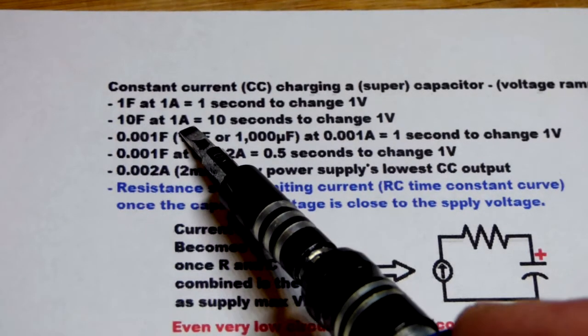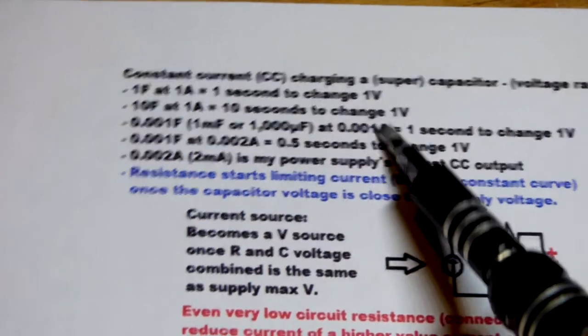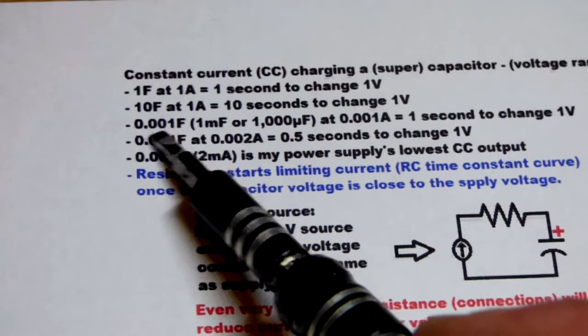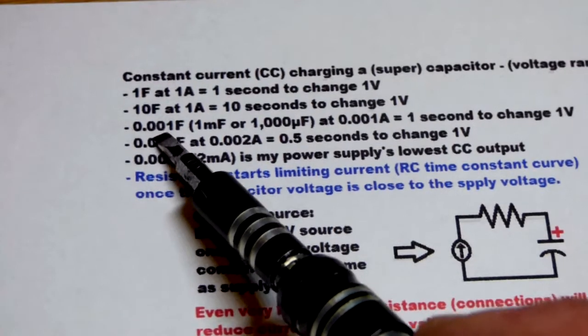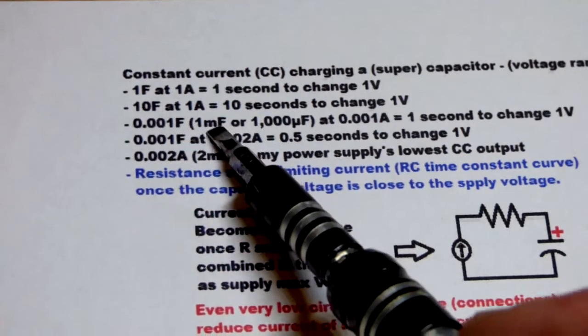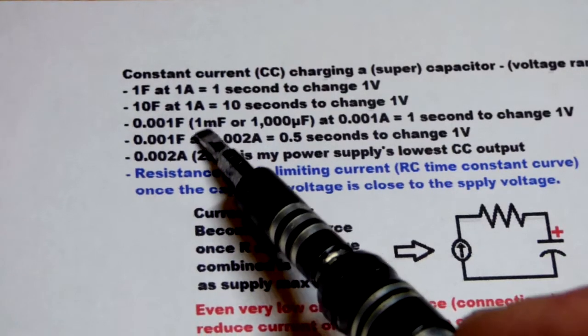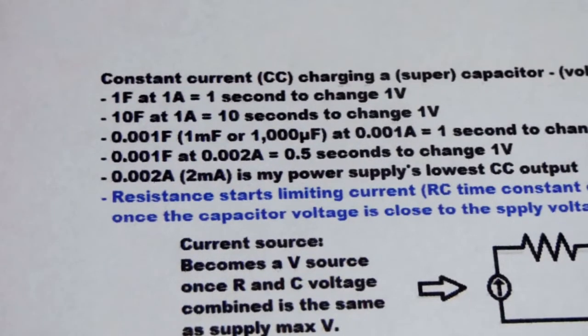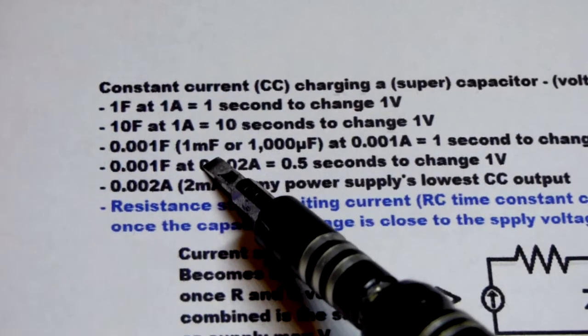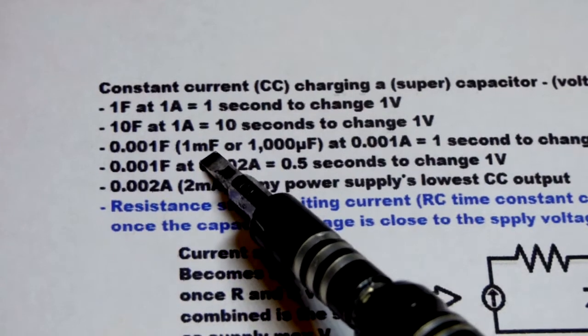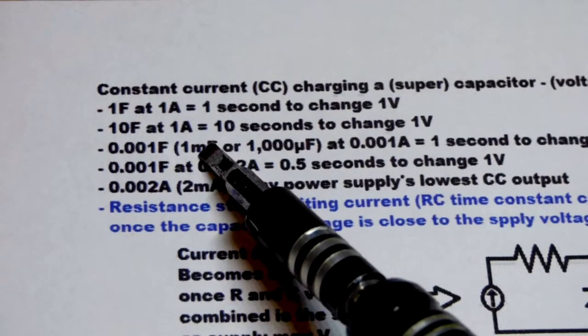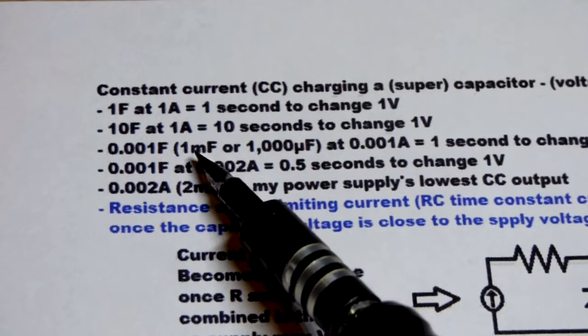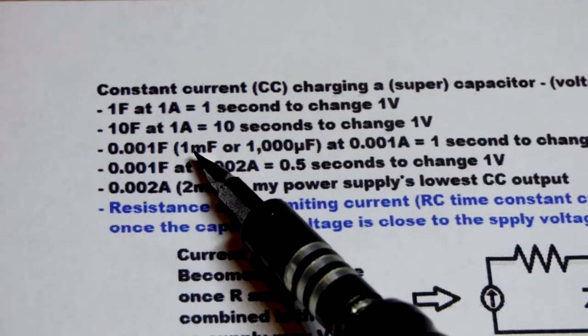10 farad, if you've got 1 amp either going in or out, takes 10 seconds for each volt. We looked at the 1000 microfarad, which is the same as 0.001 farad, 1 one-thousandth of a farad, or 1 millifarad. M is not the symbol for micro, it's the symbol for milli.